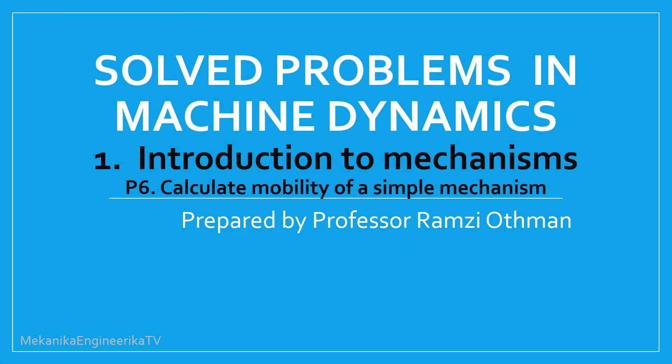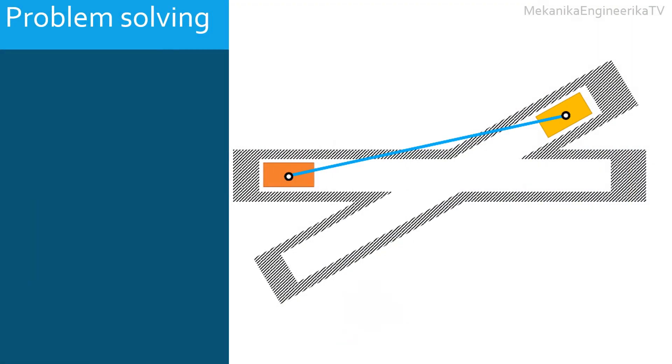This video is part of a series presenting solutions of problems related to machine dynamics. This video presents the solution of a problem dealing with the determination of mobility of a given mechanism. In this problem, we are asked to determine the mobility of the mechanism shown here.